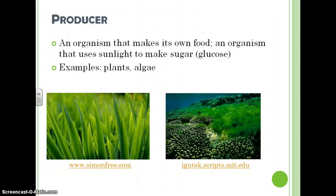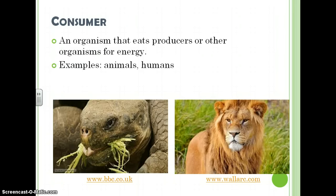Producer: an organism that makes its own food — an organism that uses sunlight to make sugar or glucose. Examples include plants and algae. Consumers: an organism that eats producers or other organisms for energy. Examples include animals and us.